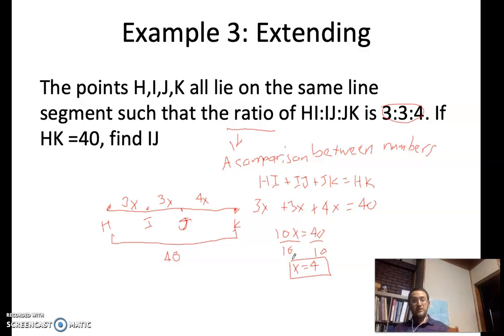Now like the last problem, just solving for x isn't good enough. It tells us what is IJ. So IJ, it tells us in the original problem, IJ is equal to 3x.